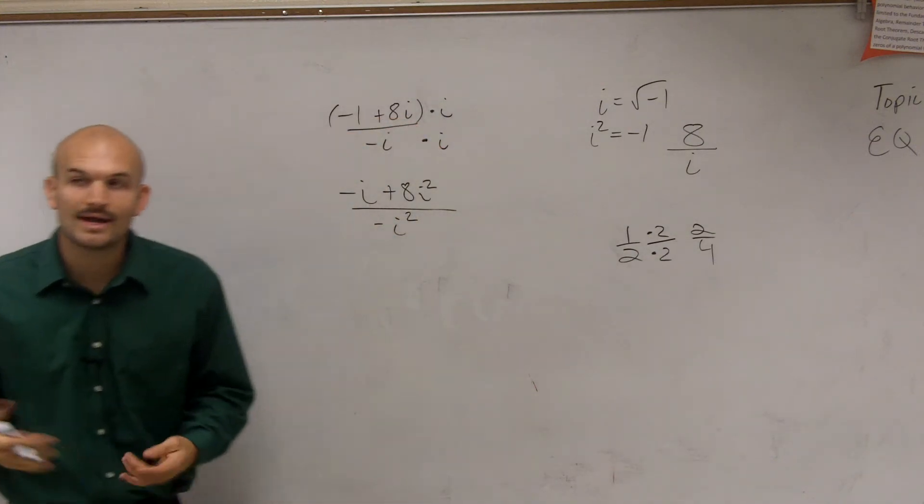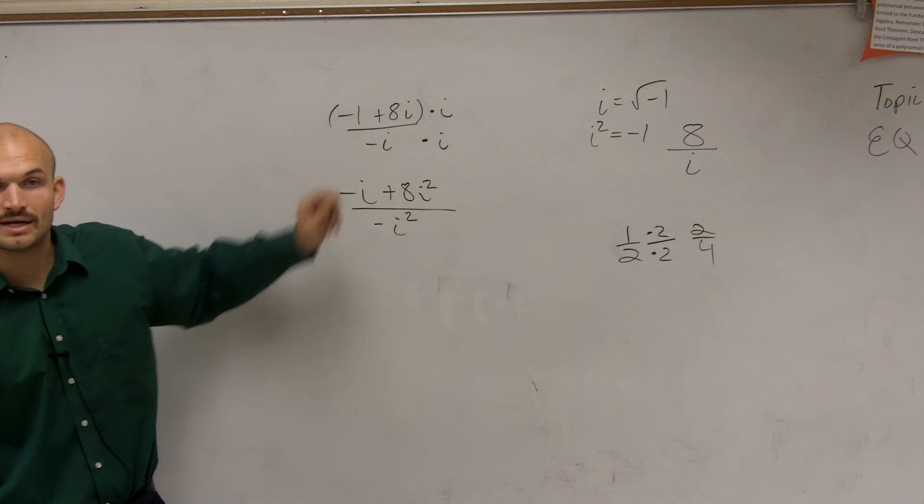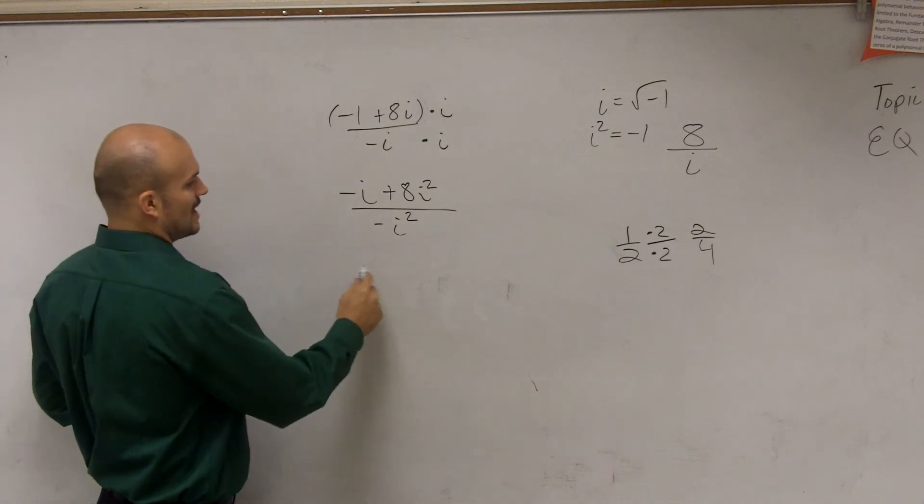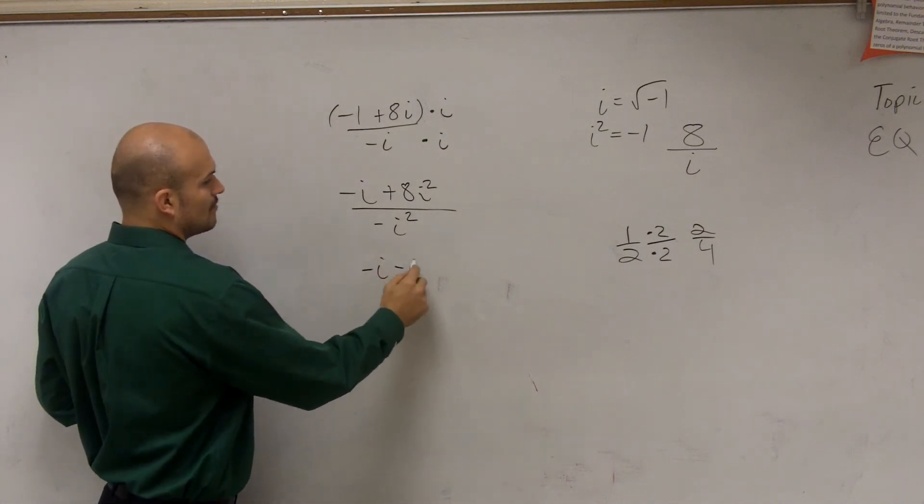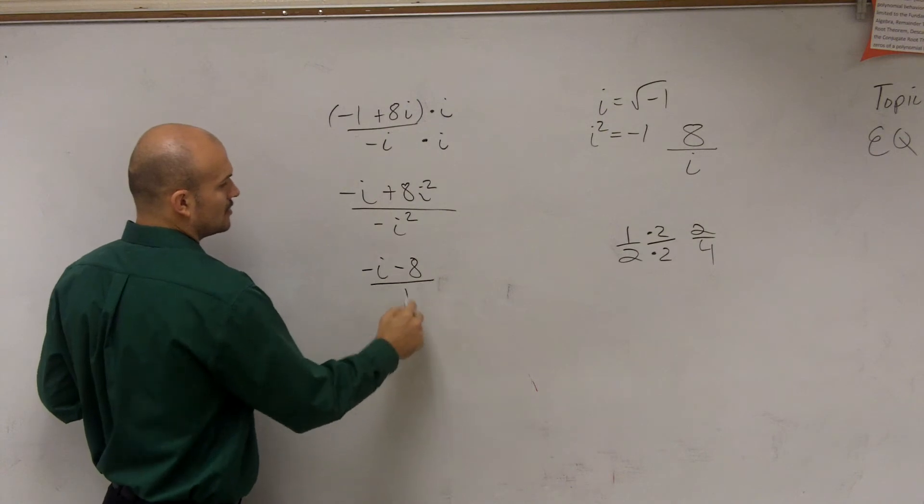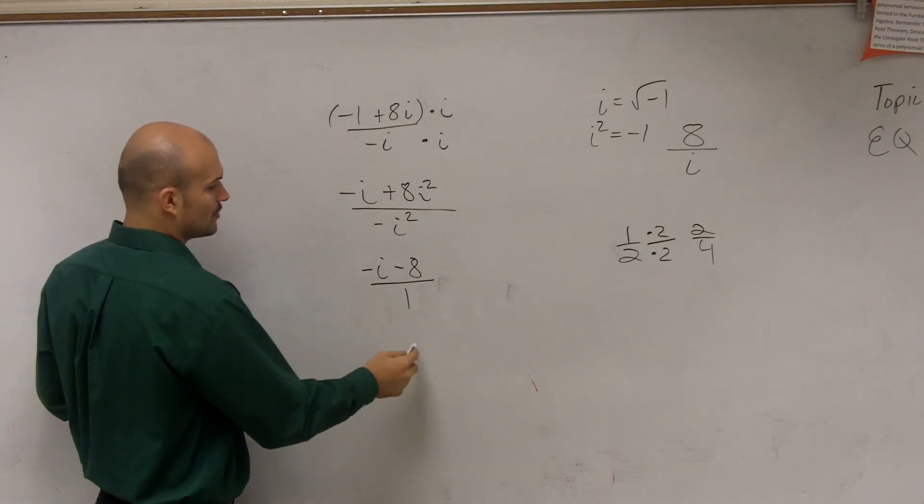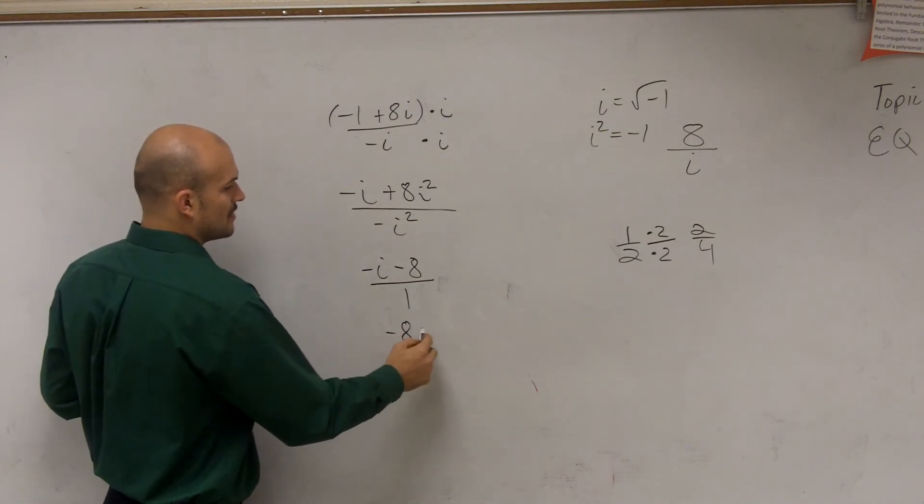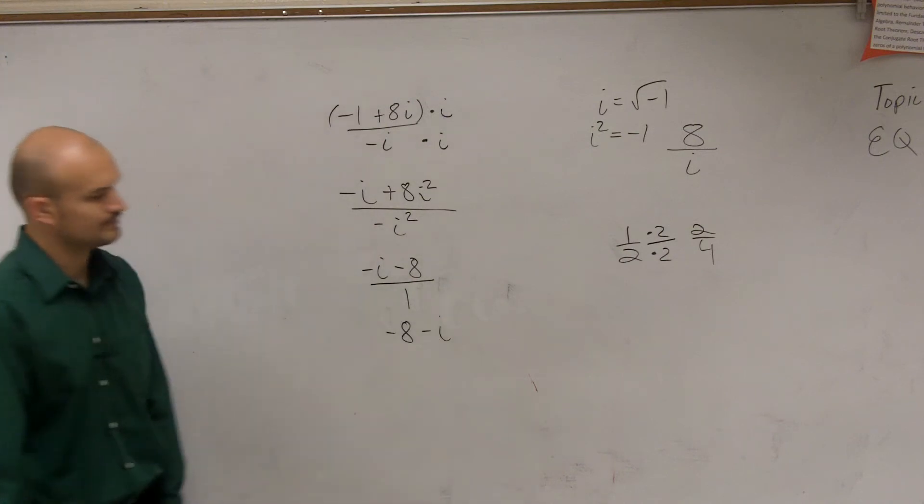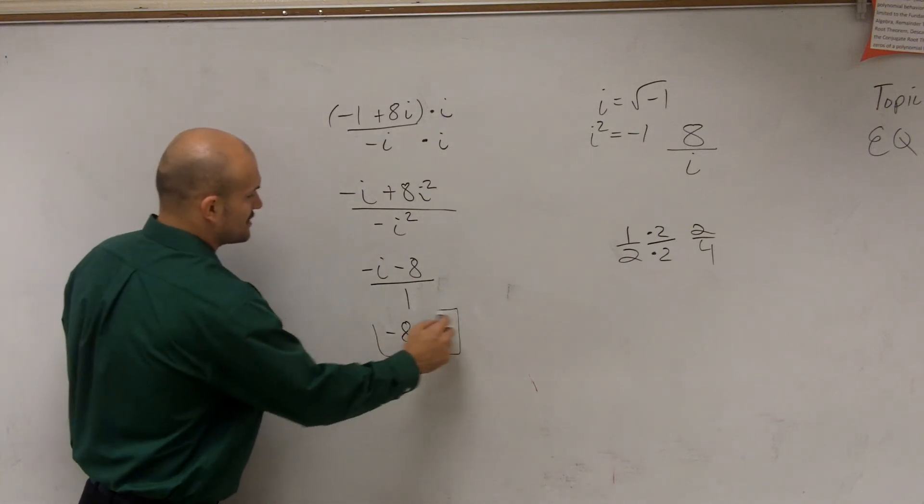So therefore, what I can do now is substitute in negative 1 for i squared. And when doing that, I get negative i minus 8 divided by 1. Rewrite the whole problem, I have negative 8 minus i. And that's going to be my final simplified answer.